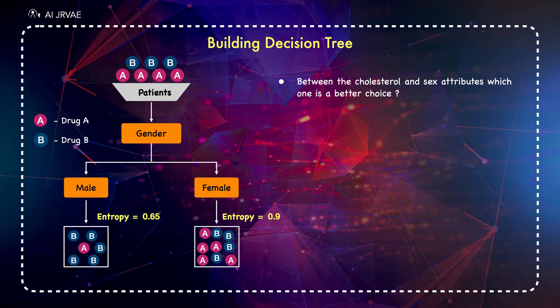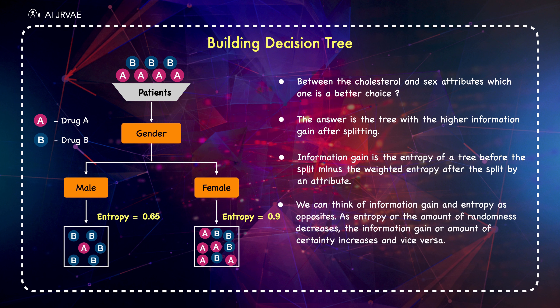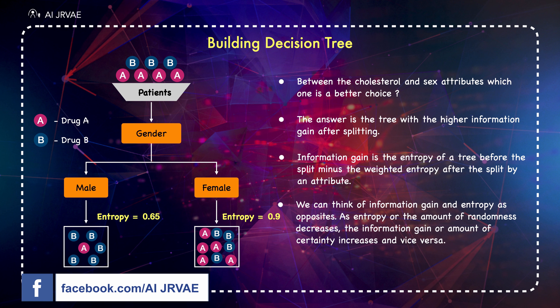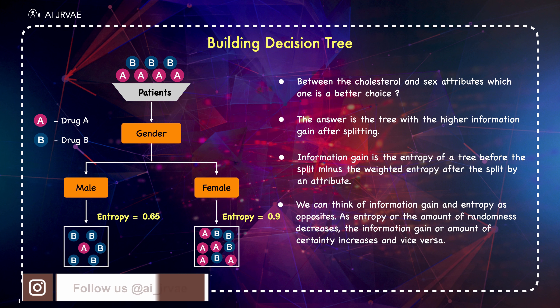The second question arises: between the cholesterol and gender attributes, which one is a better choice? Or in which tree do we have less entropy after splitting than before splitting? The answer is the tree with the higher information gain after splitting. As discussed earlier, information gain is the entropy of a tree before the split minus the weighted entropy after the split by an attribute. We can think of information gain and entropy as opposites — as entropy or the amount of randomness decreases, the information gain or amount of certainty increases, and vice versa.